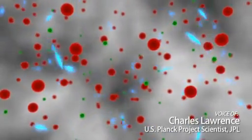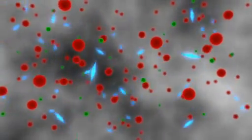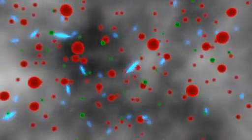Protons and electrons, seen as the red and green balls, were bouncing around scattering the light. The particles of light, called photons, shown in blue, couldn't go far without colliding with an electron.